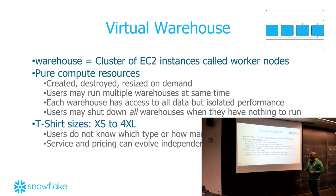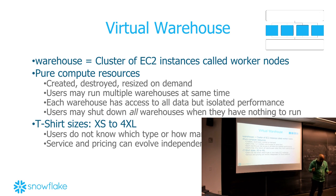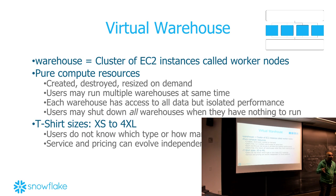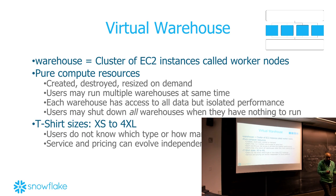We hid what warehouses really were in terms of size and resources. You basically order a t-shirt size — XS, XL, 2XL, 4XL — which is a multiple of two in terms of the compute resources you get. This allows us to change the instance types we may use in the future as well.